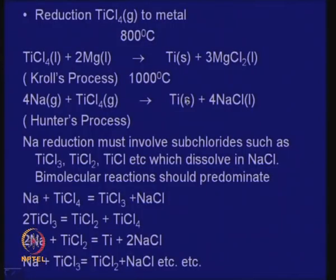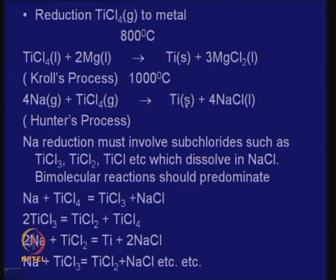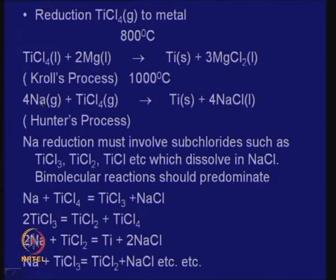In process metallurgy we have to stop and think: why does it happen, can we control it, can we try to produce something not powdery? The Hunter's process, which was the first process, gave a superior crystalline product, but Kroll's process has its advantages. In Kroll's process we are dealing with liquids at a lower temperature, whereas in Hunter's process we deal with gaseous reactants. The moment you have gaseous reactants, the entire reactor shape and details change. So we prefer magnesium reduction, but the product quality is the problem.